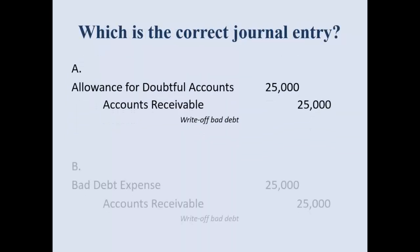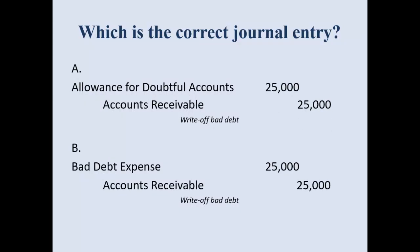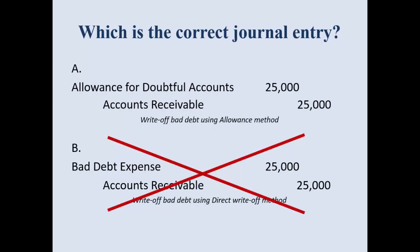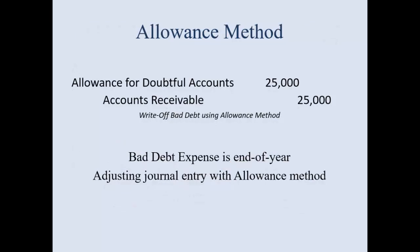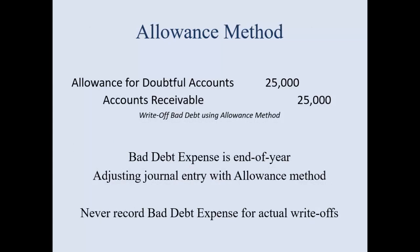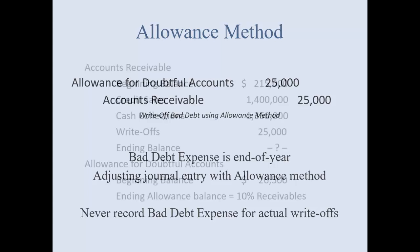What is the correct journal entry? The entry shown below is how you would journalize this using the direct write-off method, but if you are using the allowance method, you want to use the one above. Bad debt expense is an end-of-year adjusting journal entry with the allowance method, so you never record bad debt expense for an actual write-off with the allowance method. Make sure you put that in your notes.